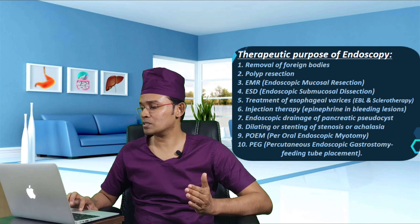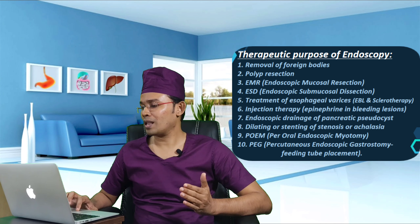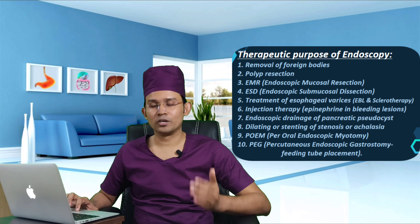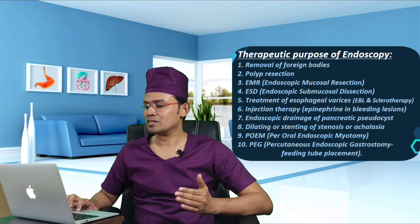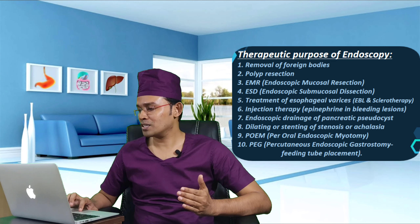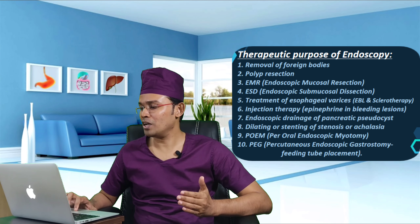9. POEM — per oral endoscopic myotomy. 10. PEG — percutaneous endoscopic gastrostomy — feeding tube placement. So these are the endoscopic therapeutic options.